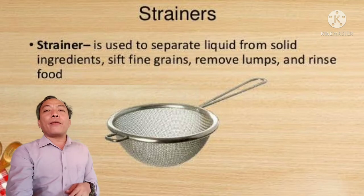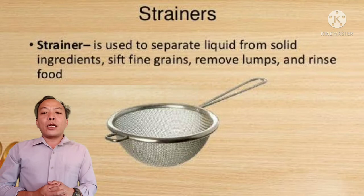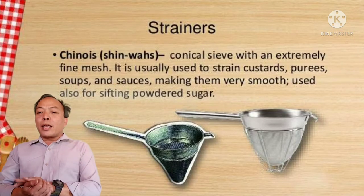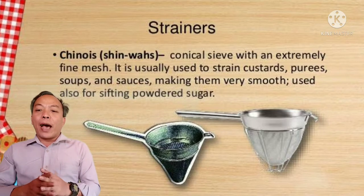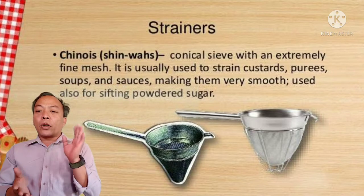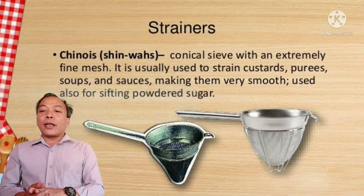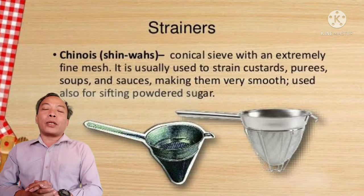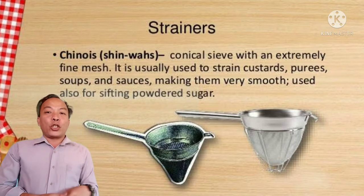Another example of a strainer is the chinois. The chinois is a conical sieve with extremely fine mesh. It is usually used to strain custards, purées, soups, and other sauces, making them very smooth. It is also used for sifting powder or sugar.